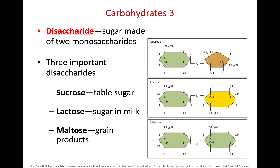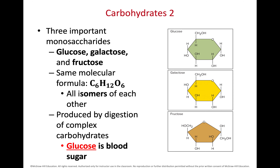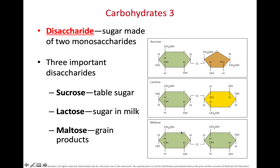We also have two subunit sugars called disaccharides, made of two monosaccharides bound together. Classic disaccharides in the human being include sucrose, lactose, and maltose. When we consume these disaccharides, we break them down into the monosaccharides they're made of. Glucose is the most common monosaccharide, making up the majority of these disaccharides.